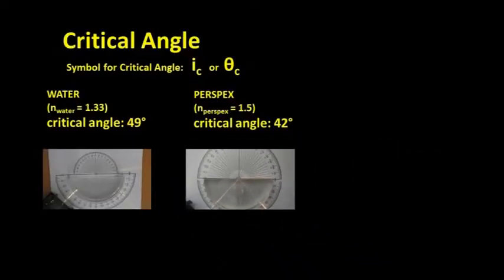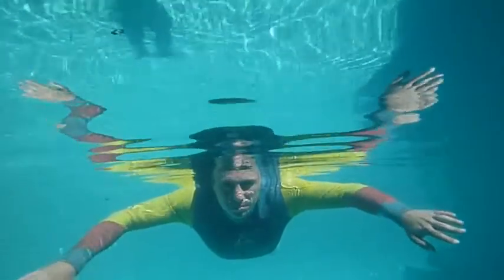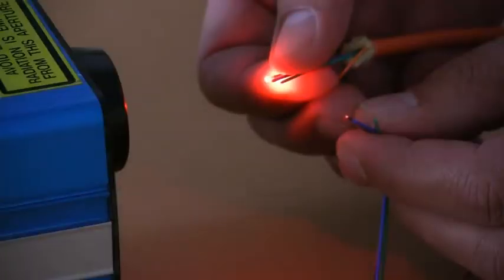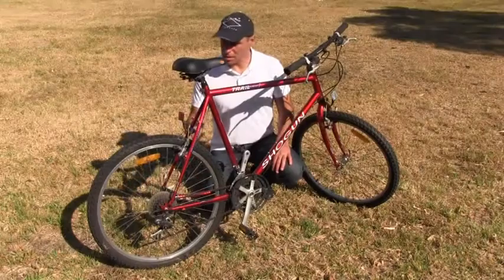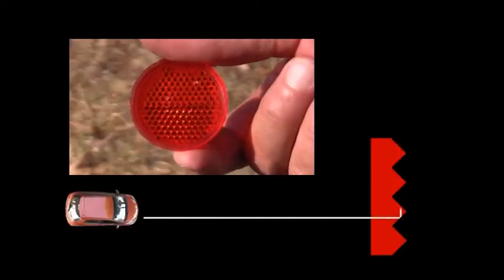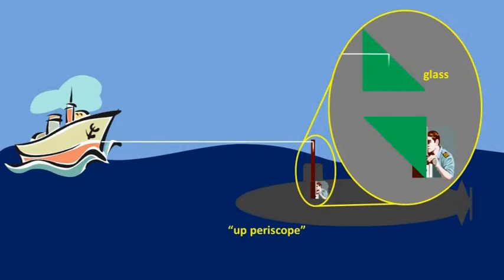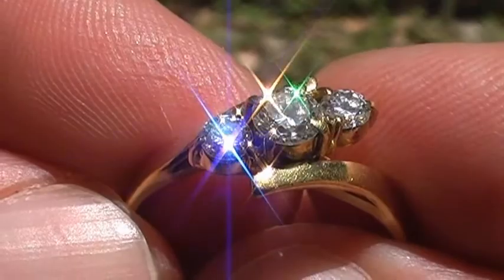Total internal reflection is not just a scientific curiosity. In part E, we look at how total internal reflection has been put to good use. We shine some light onto reflectors to show how they work, look into a periscope, so to speak, and explain how a girl's best friend gets its sparkle.